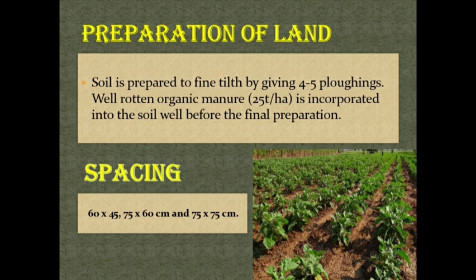Preparation of land. Soil is prepared to a fine tilth by giving 4 to 5 ploughings. Well-rotted organic manure is incorporated into the soil well before the final preparation.